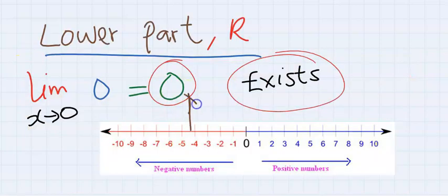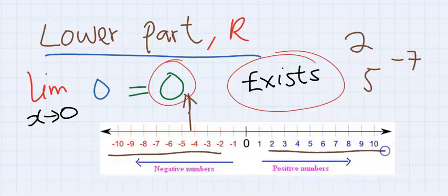Though we got zero here, which is a number, this can be anything. It can be two, it can be five, it can be minus seven, as long as it exists on the number line. It exists.